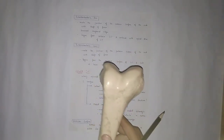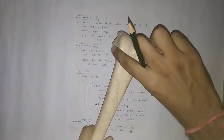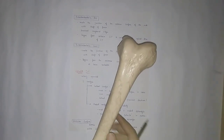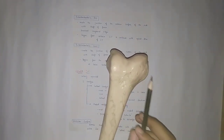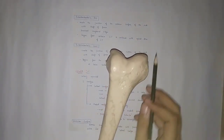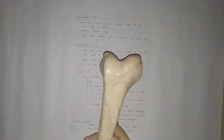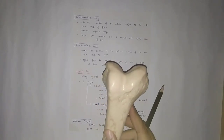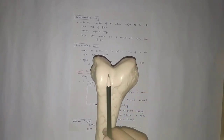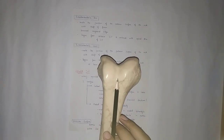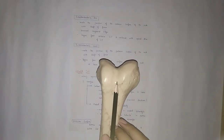The lower end is quite expanded compared to the shaft, as you can see. The medial side is larger than the lateral side. The two condyles present are the medial condyle and lateral condyle. Anteriorly, the patella articulates with this region.